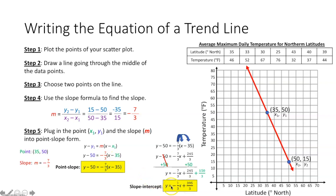The cool thing about having the equation of a trend line is it allows you to figure out values not in your table. For example, to find the temperature at a latitude of 42 — which isn't in our table — you plug 42 in for x into the equation and it gives you the temperature. That's what a trend line or equation of a line of best fit helps you do.